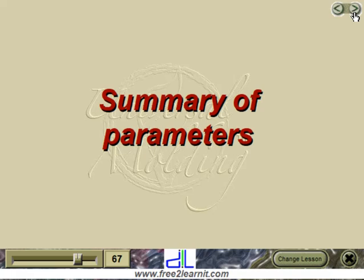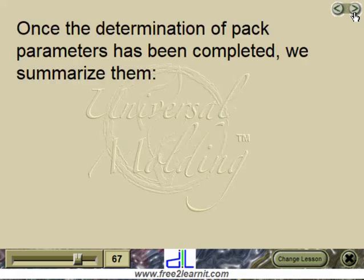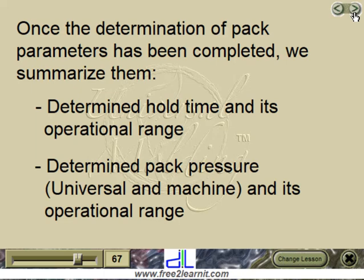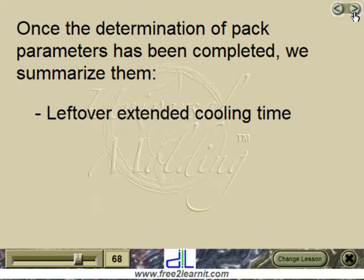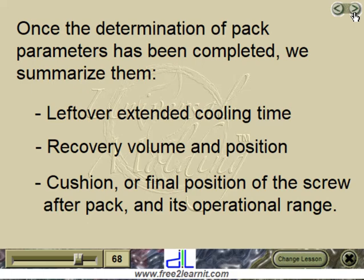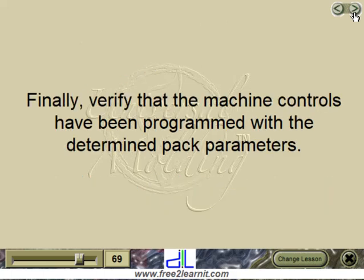Summary of parameters: once the determination of pack parameters has been completed, we summarize them — determined hold time and its operational range; determined pack pressure (universal and machine) and its operational range; leftover extended cooling time; recovery volume and position; cushion (or final position of the screw after pack) and its operational range. Finally, verify that the machine controls have been programmed with the determined pack parameters.